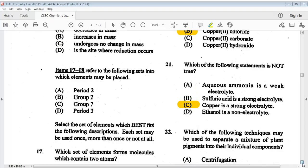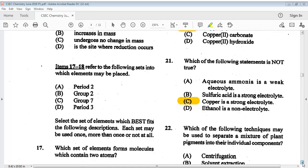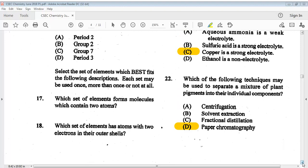Question sixteen: in the electrolysis of aqueous copper 2 sulfate solution using copper electrodes, the anode, the answer is A, decreases in mass. Items seventeen to eighteen refer to the following sets into which elements may be placed: A period 2, B group 2, C group 7, D group 3. Select the set of elements which best fits the following descriptions. Question seventeen: which set of elements forms molecules which contains two atoms? The answer is C, group 7. Question eighteen: which set of elements has atoms with two electrons in their outer shells? The answer is B, group 2.